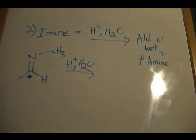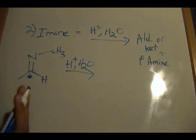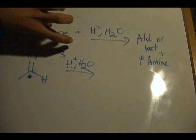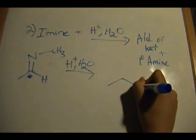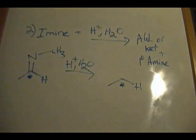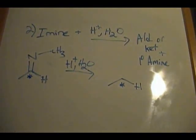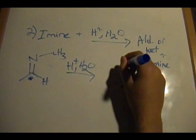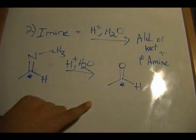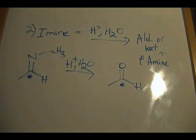In order to draw the product, similar to part one where I drew the starting material without the double-bonded oxygen, in this case I'm going to draw the starting material without the double-bonded nitrogen and R group. I'll draw this piece with the star there. Since we're doing the reverse and forming an aldehyde or ketone, all we have to do is add a double-bonded oxygen to the star carbon. And that's our aldehyde.